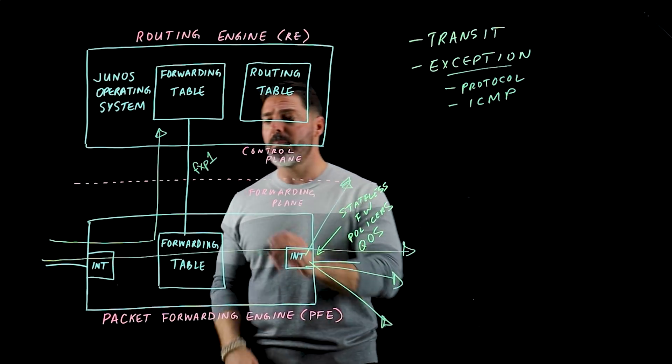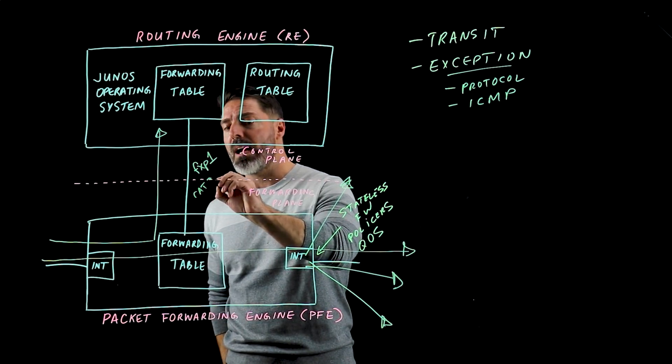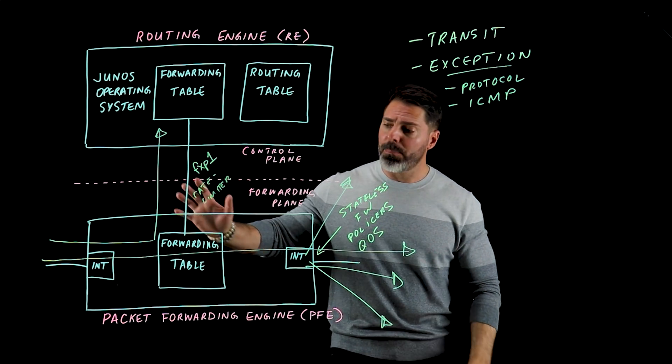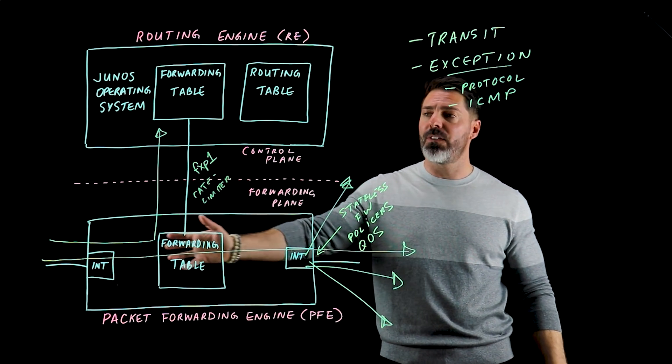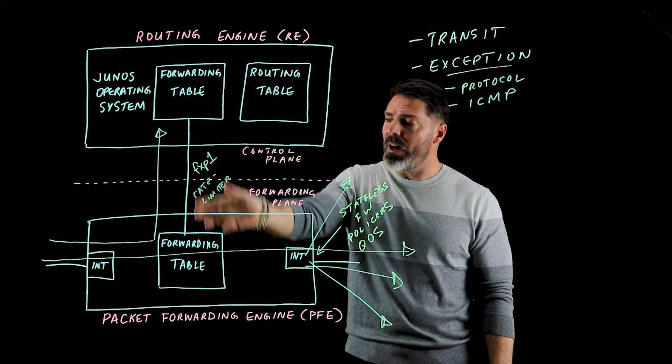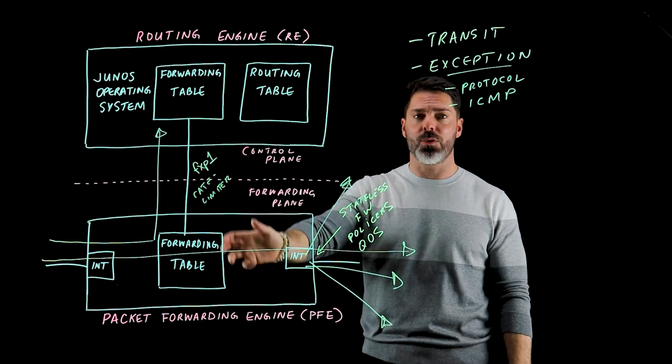So there are some rate limiters that are applied on this link right here and some DDoS protections that prevent somebody from sending an influx of traffic that's destined towards the routing engine from unnecessarily starving the resources right here.